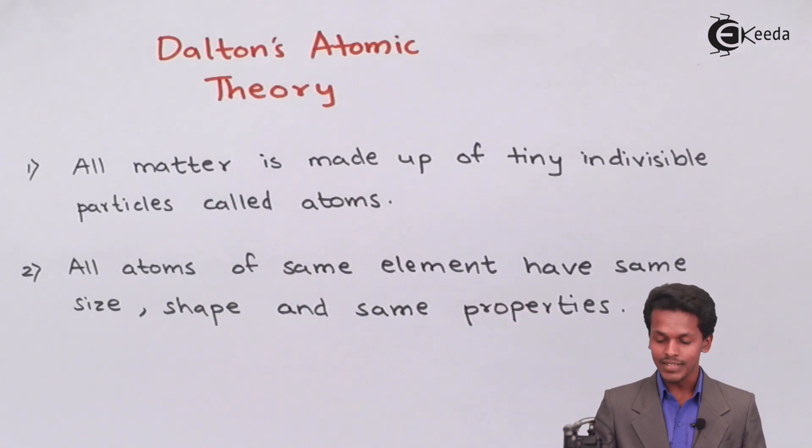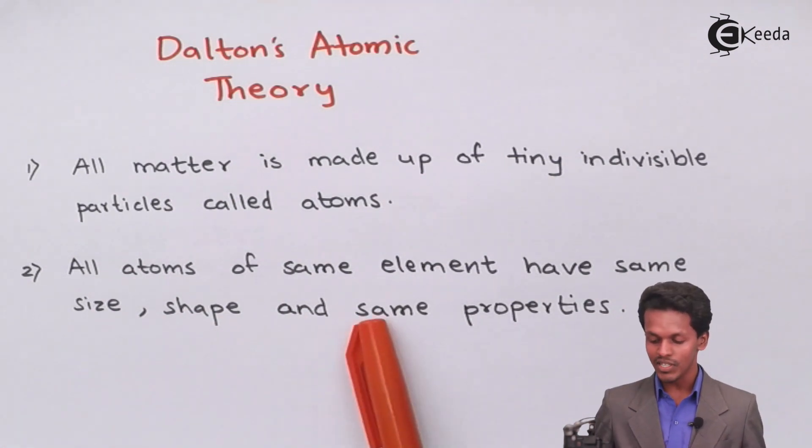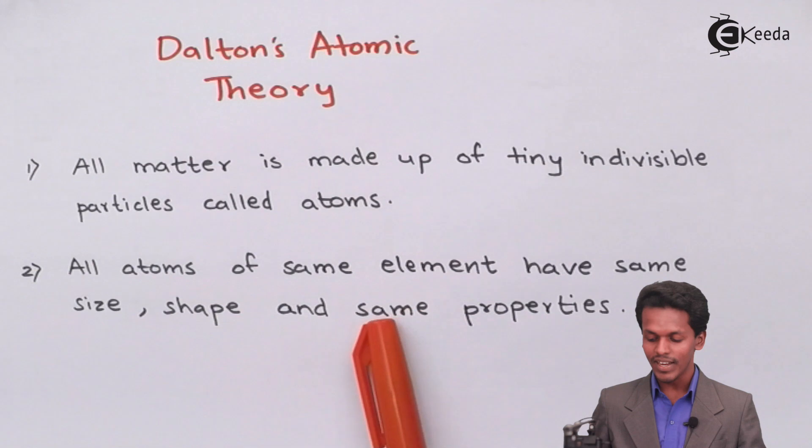Suppose if I am talking about an element like copper, and if I am talking about another element that is Fe, that is iron, copper has different properties. So the atoms of all the copper will have the same property, and hence they have mentioned that the atoms of the same element will have same property.